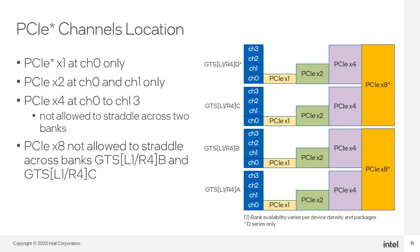For example, trying to use channels two and three of bank A and channels zero and one of bank B is not allowed. The by-four interface must be within a bank boundary. Finally, for by-eight, your interface must use the dedicated bank pairs such as banks A and B or banks C and D. You cannot put the interface across two banks that are not paired for PCIe, like B and C.